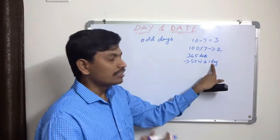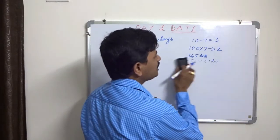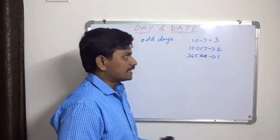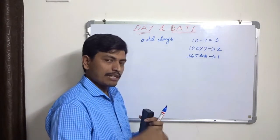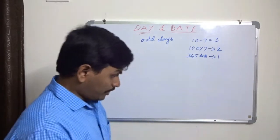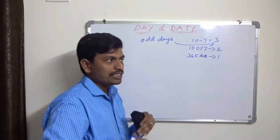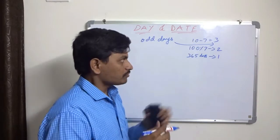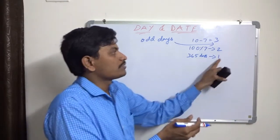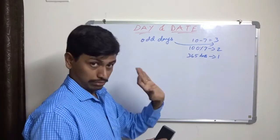For every normal year we count one odd day. If it is a leap year, we count two odd days. So today if it's Monday, next year the same day will fall on Tuesday. All these remainders — one, two, three — are called odd days. Odd days means: divide by seven and take the remainder. Those remainders are called odd days. We must know about odd days before learning the day of any date.